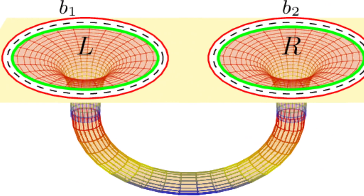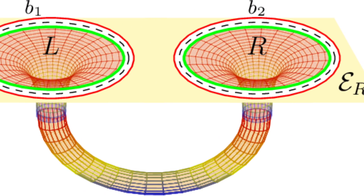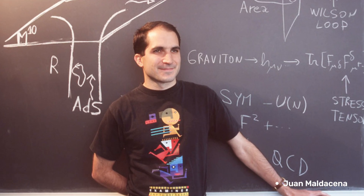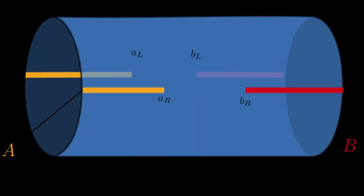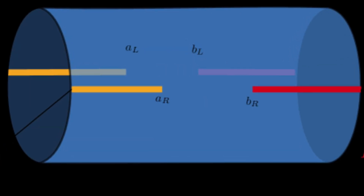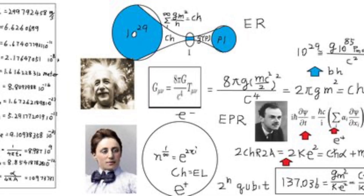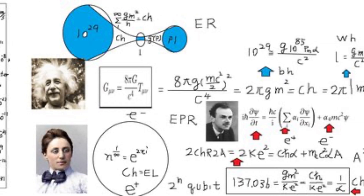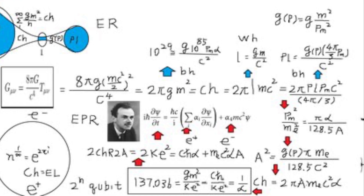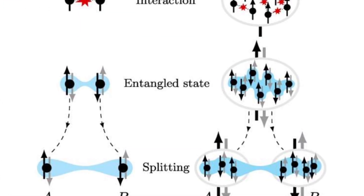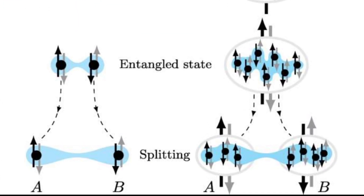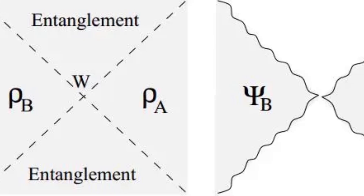The ER-EPR conjecture, proposed by Juan Maldacena and Leonard Susskind, suggests a deep connection between Einstein-Rosen bridges and quantum entanglement. According to this conjecture, wormholes could be the geometric manifestation of entangled particles, offering a new perspective on the nature of spacetime and quantum mechanics.